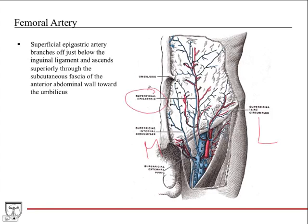The superficial epigastric artery branches just below the inguinal ligament. It travels very superficially through the subcutaneous tissue — even though it comes off in the lower extremity, it ascends up the anterior abdominal wall subcutaneously toward the umbilicus.